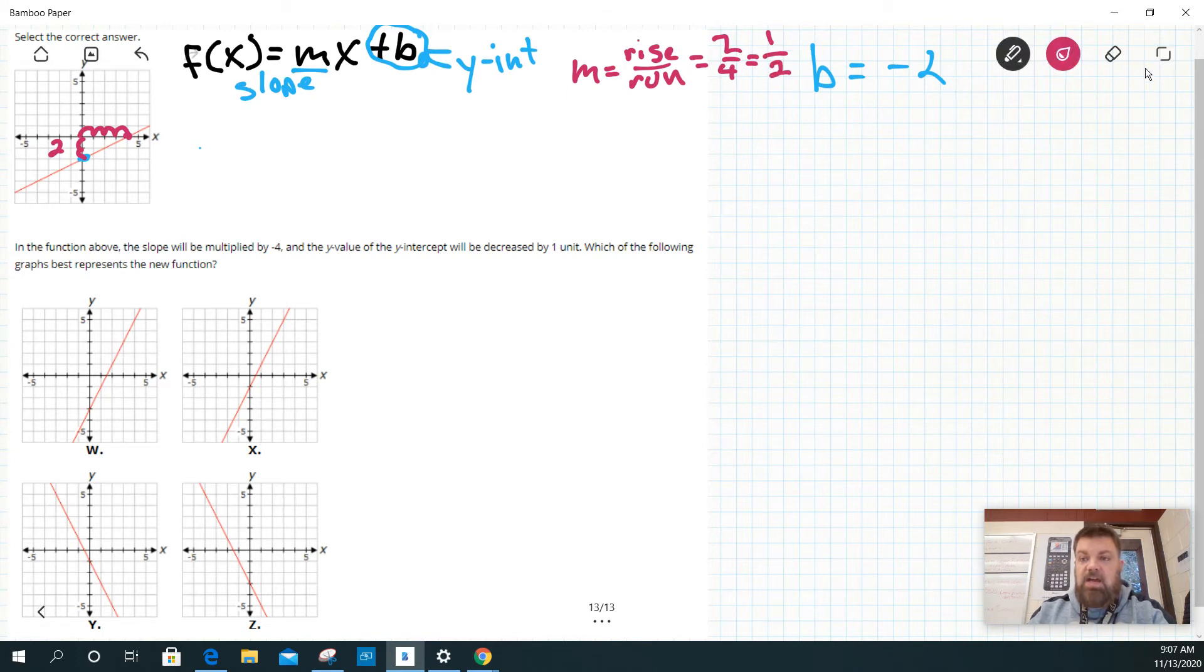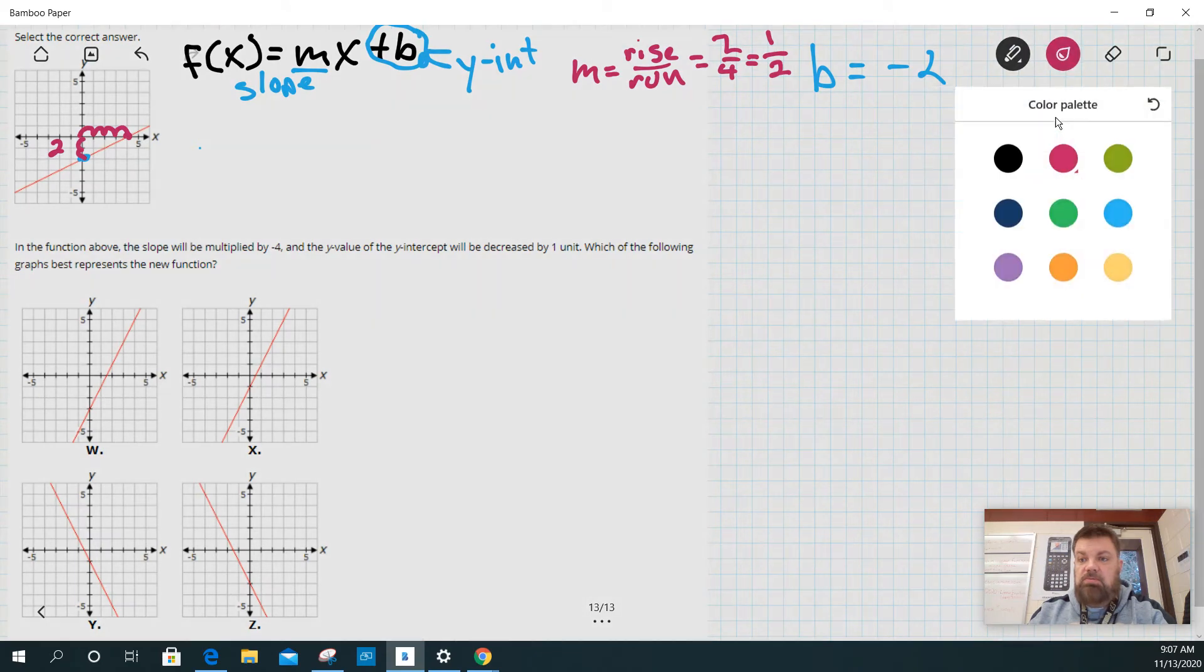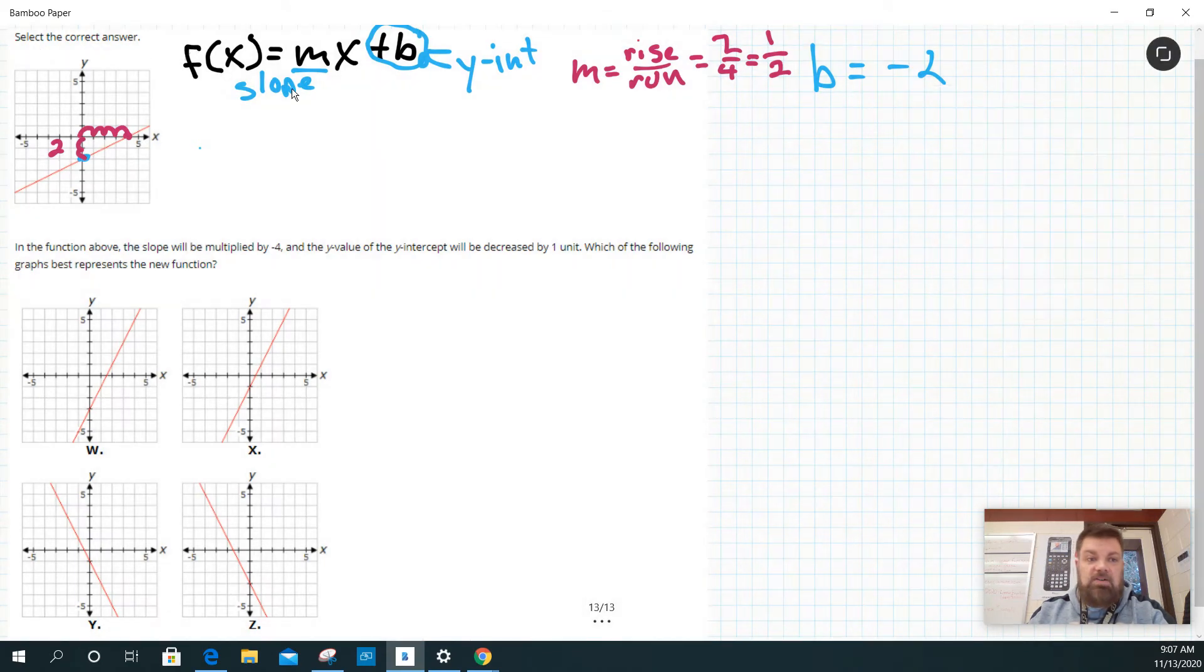So I've got my slope and my y-intercept. In other words, what I just figured out is this graph is the graph of the function one-half times x minus two.